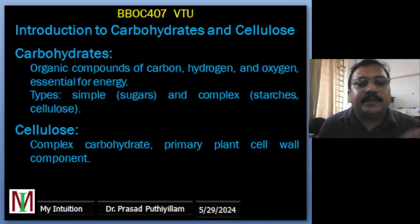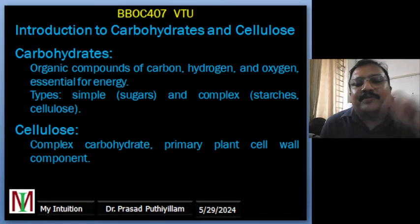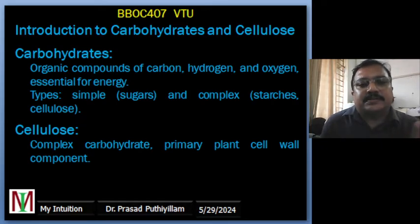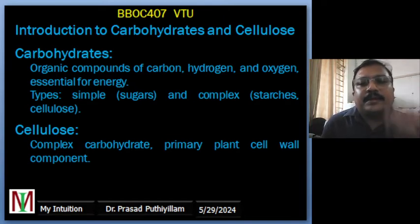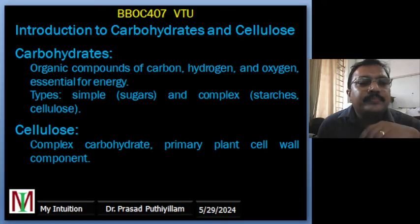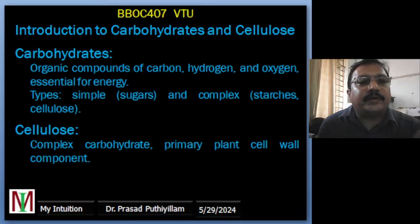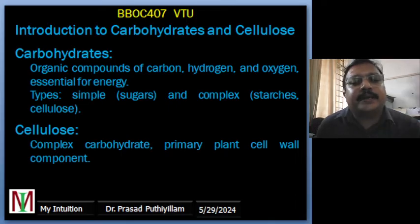The beta-1,4 linkage of D-glucose units is the key structural feature of cellulose. Cellulose is a primary structural component of plant cell walls and is the most abundant organic polymer on Earth. It is relevant here because cellulose has a fibrous nature with micro- and even nano-sized pores that can be used in filtration applications.